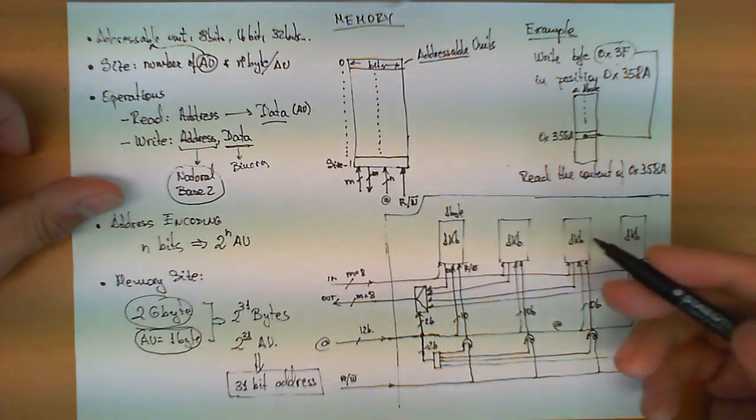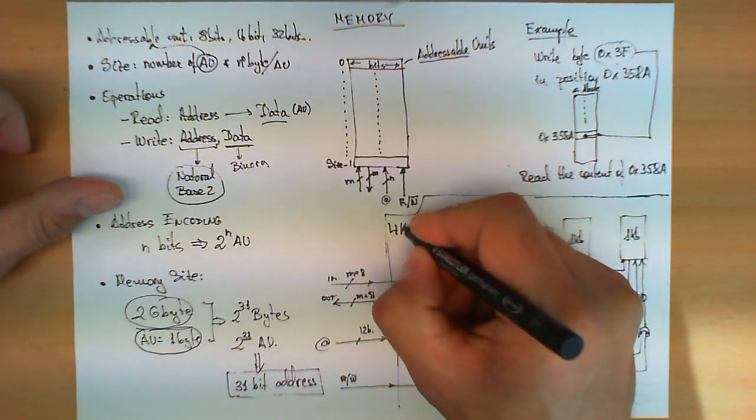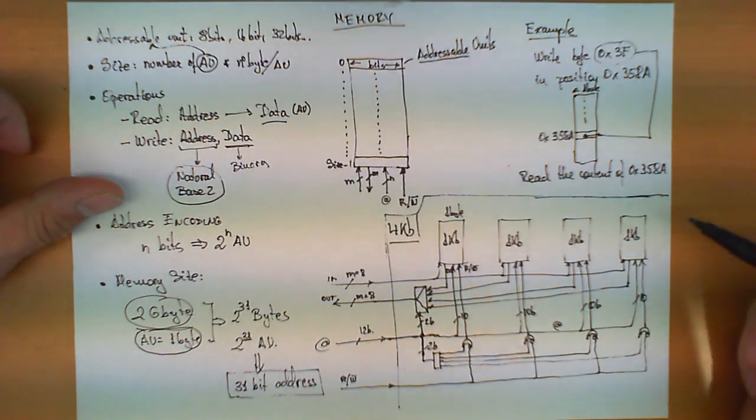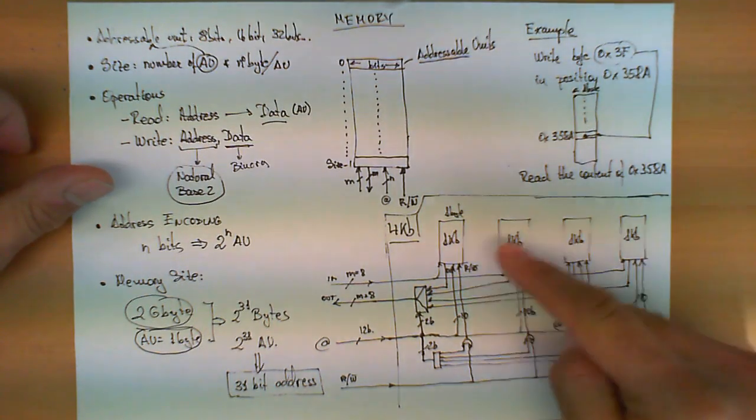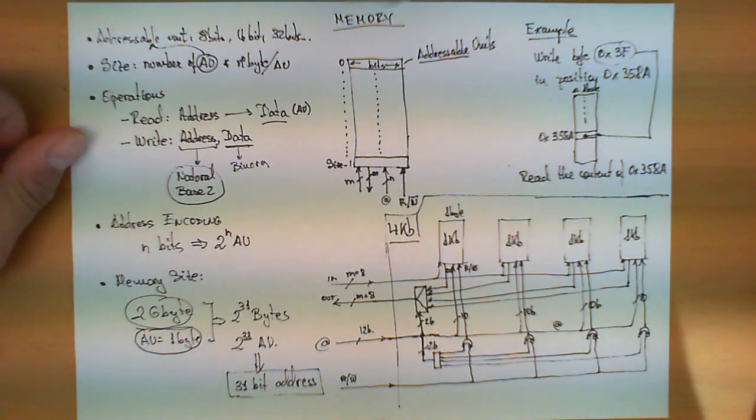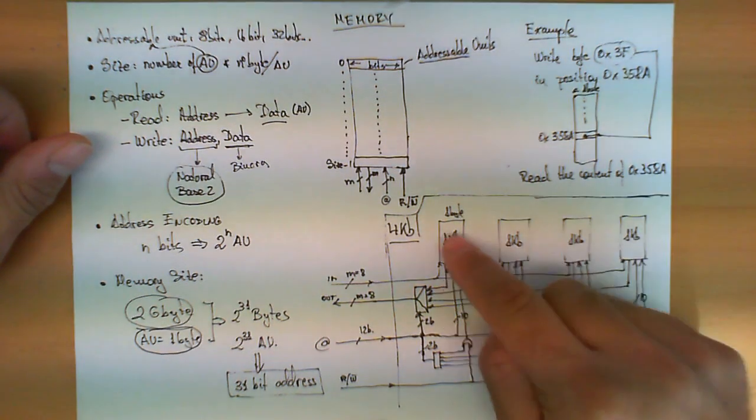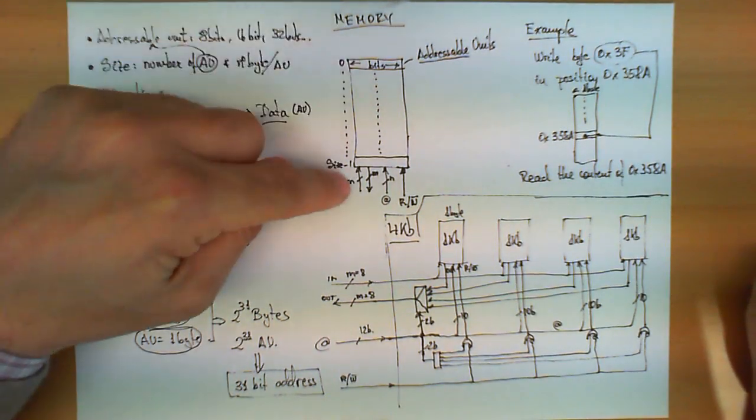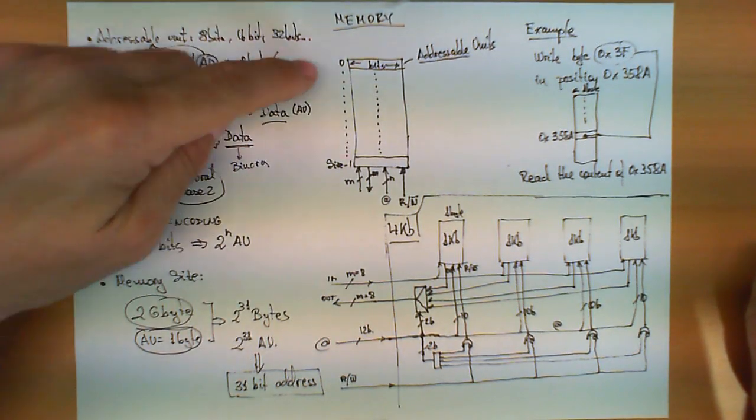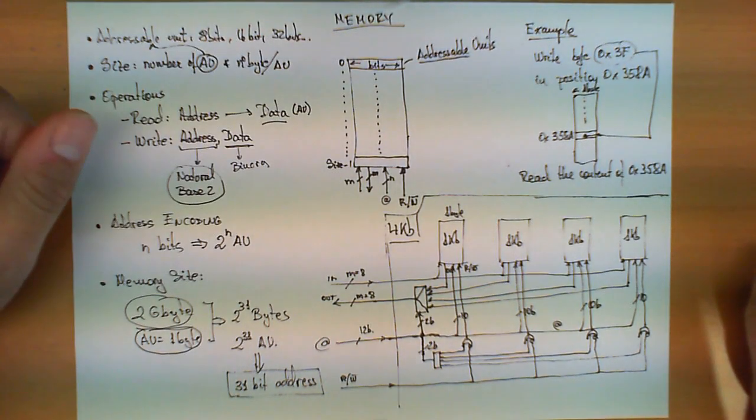So, this new circuit over here will implement a four kilobyte memory chip combining four units of a one kilobyte memory chip. And this is typically the approach that is following most computer systems to combine several chips of the same size and obtain one single circuit that behaves a long list of these addressable units.